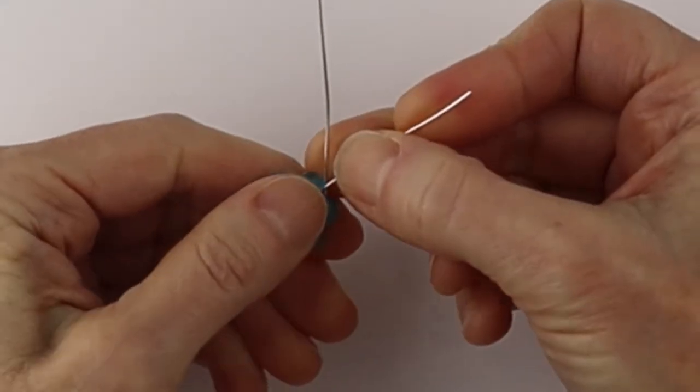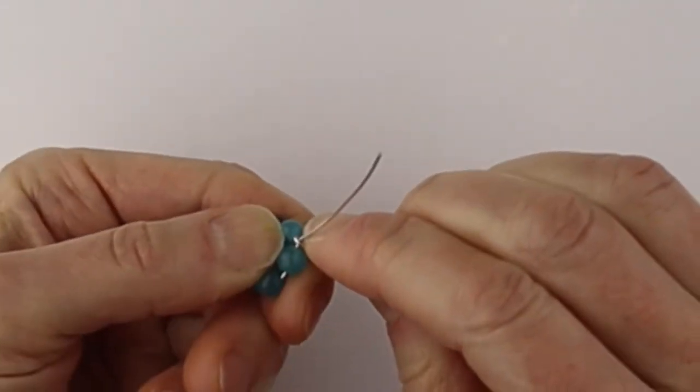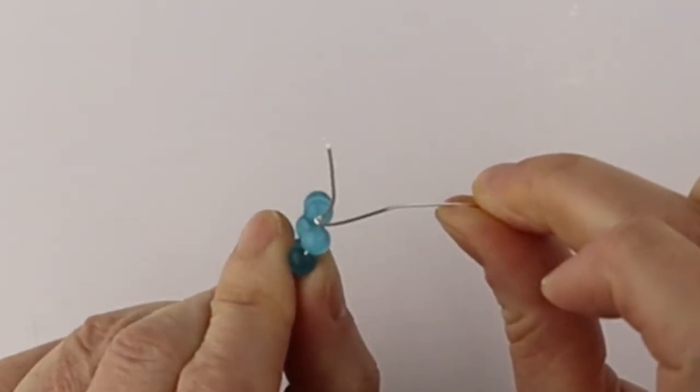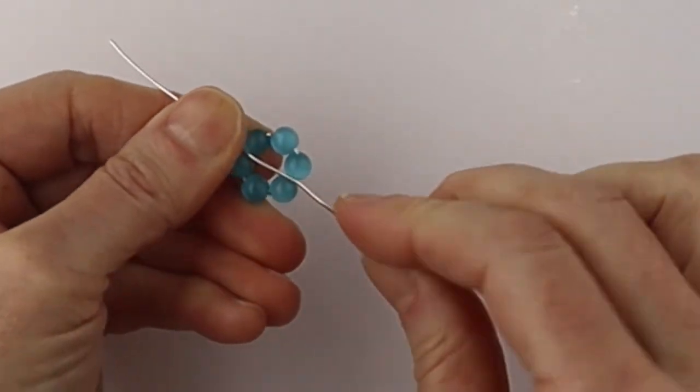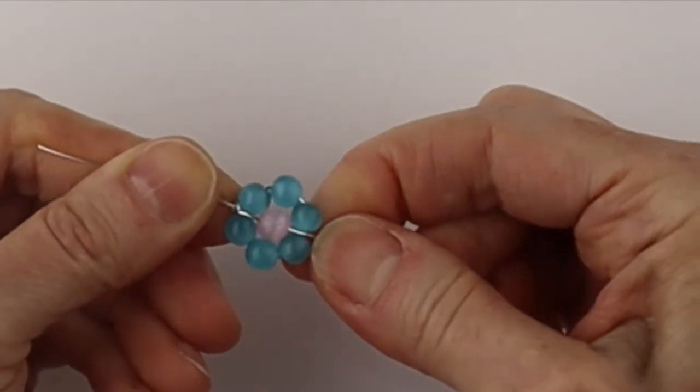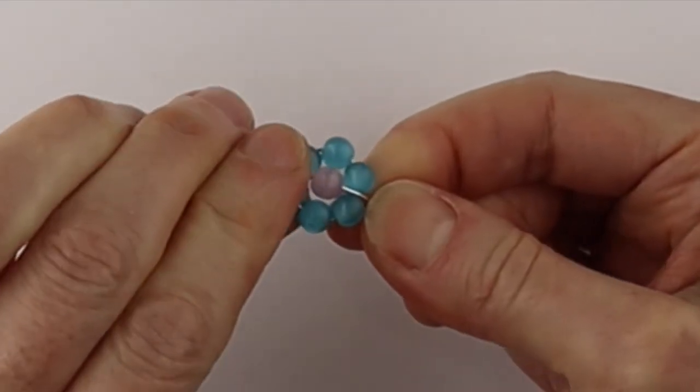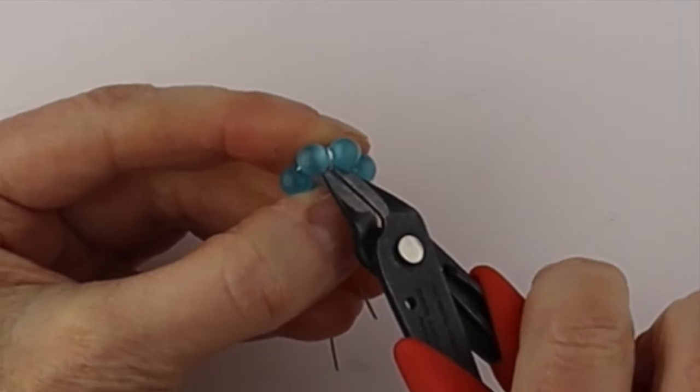Now we're going to wind the wire around the top to secure it. We have it in a circle and then push the wire straight down the center. Now we'll put another six millimeter bead and then take the wire and just bend it to the back. Clip the wire flush.